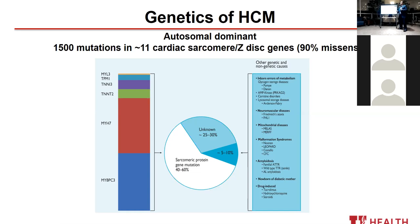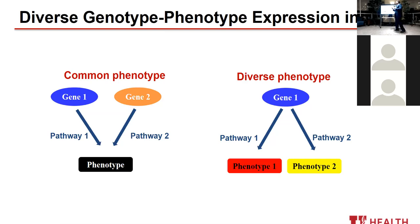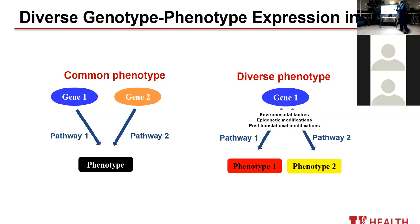There are also phenocopies or mimickers of hypertrophic cardiomyopathy — infiltrative and metabolic disorders — which I won't touch on today. HCM is very heterogeneous at both the genotype and phenotype levels. Different genes can lead to the same phenotype, and more interestingly, one gene can lead to different phenotypes. Even brothers or sisters with the same mutation can present in totally different ways — likely related to environmental factors, epigenetic modifications, and post-translational modifications.